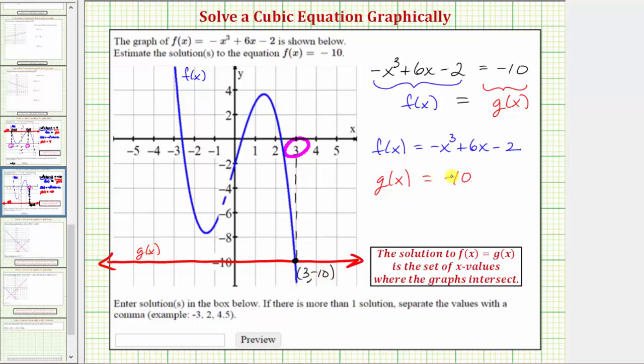So because our solution is x equals 3, at the bottom of the page we're asked to enter the solution or solutions in the box. If there is more than one solution, separate the values with a comma. Well, we only have one solution, so we only enter 3. I hope you found this helpful.